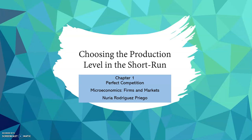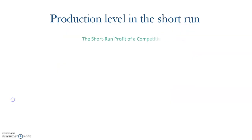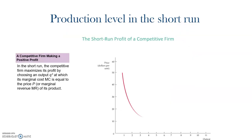Hi! This is the third video of Chapter 1, Perfect Competition. In this video, we will see how much quantity of product will be produced in the short run. In this slide, we see the graph of the decision for a particular firm.